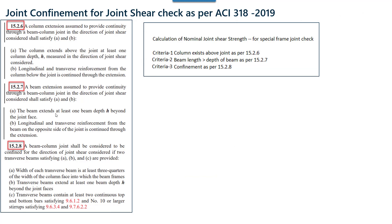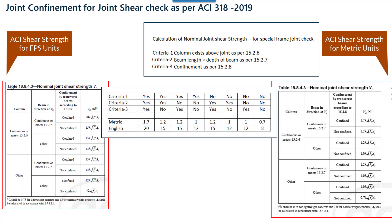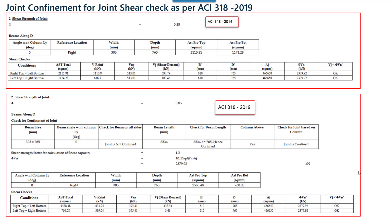The next point is joint confinement as per ACI 2019, specifically for the joint shear check. The code has mentioned three criteria as per clauses 15.2.6, 15.2.7 and 15.2.8. Based on which of the three criteria are satisfied, the shear strength value has to be decided.